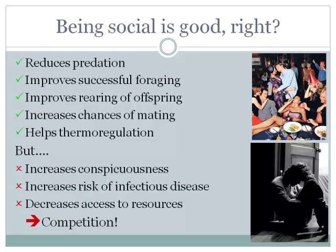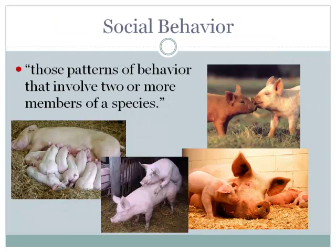There are certain disadvantages as well. Being social can increase conspicuousness, increase the risk of infectious diseases when animals live closely together, and decrease access to resources — especially for animals low in the social hierarchy. This is really the nub of the problem for us in terms of sow housing: competition.